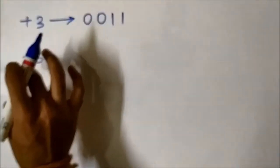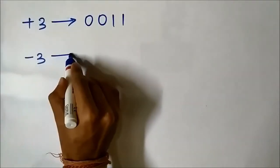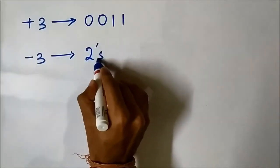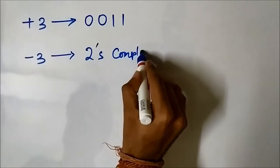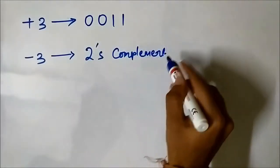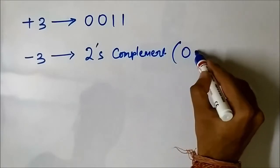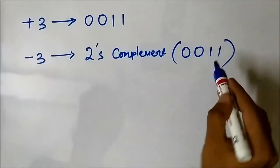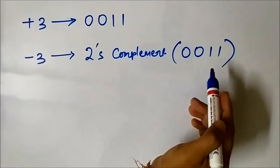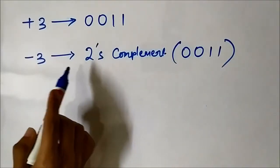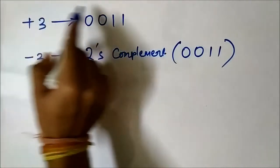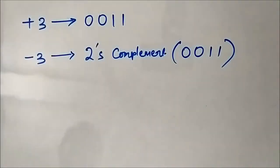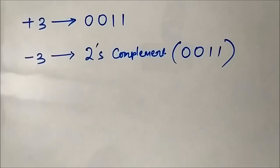The negative integer -3 will be the 2s complement of the binary representation of +3, which is 0011. That means we simply calculate the 2s complement of 0011, and that will be the binary representation of -3 in the 2s complement representation system. I have already posted a video in my channel on how to calculate 1s and 2s complement of a binary number.